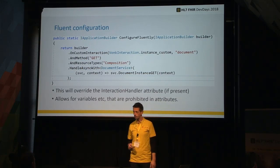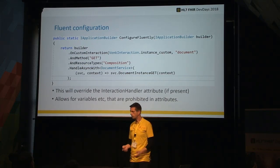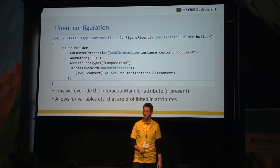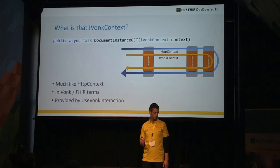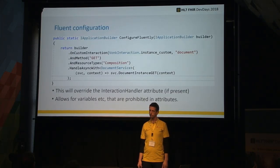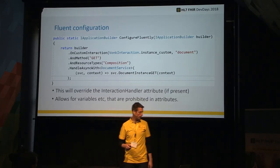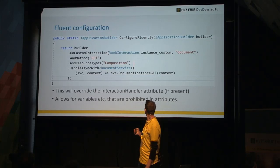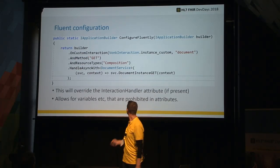Here's the fluent configuration alternative. Instead of using an attribute, you can do it fluently, which is easier if you need variable things or things that are not statically available for an attribute. The specification also says it can be done on the type level, not just the instance level. There are two methods — there is also a document type POST, configured the same way except it's on method POST and type custom.